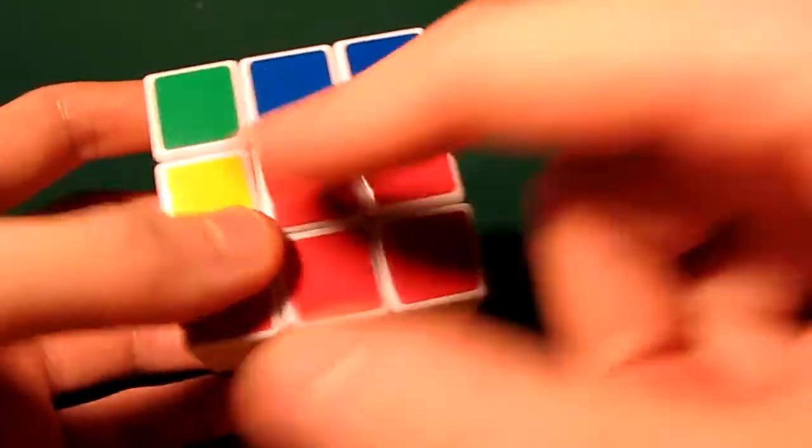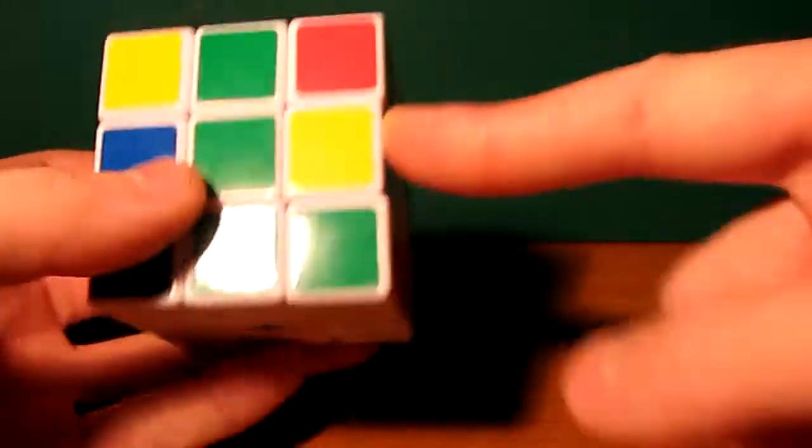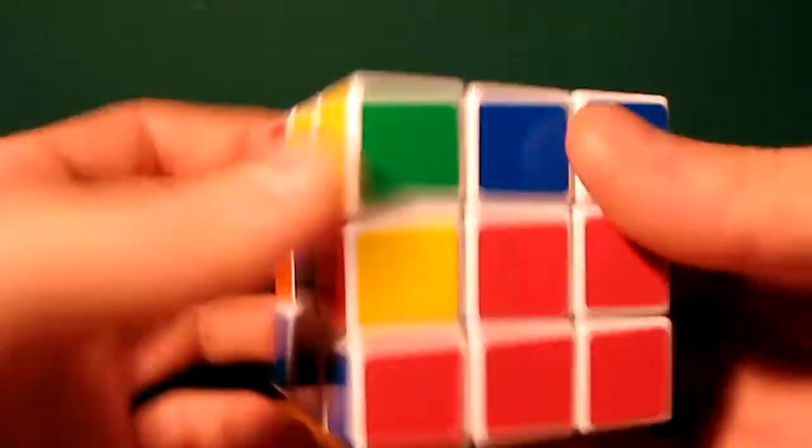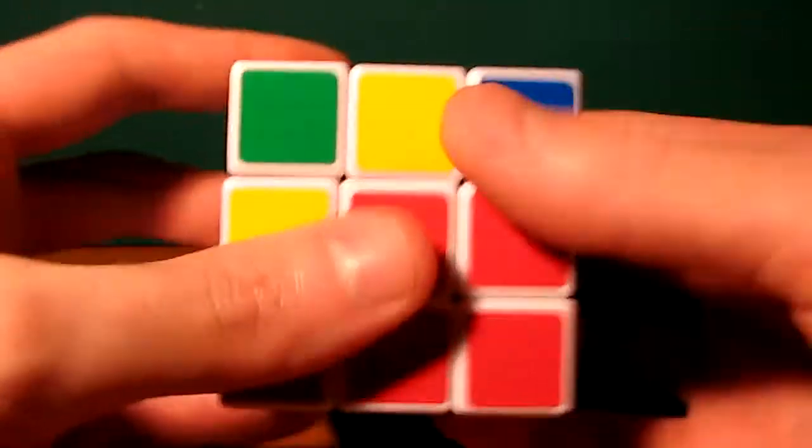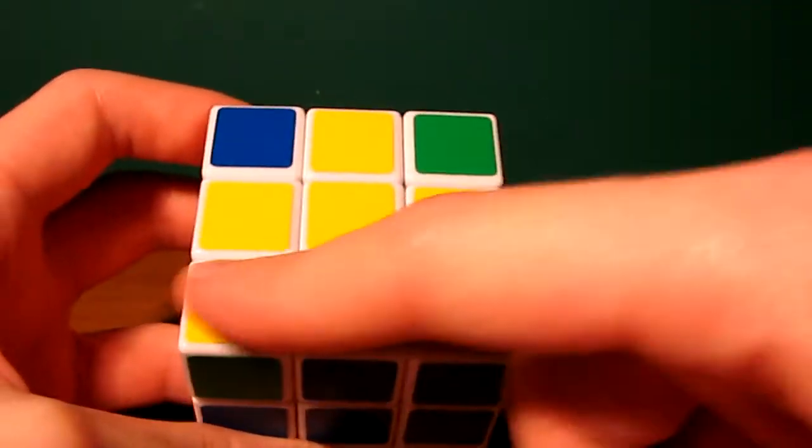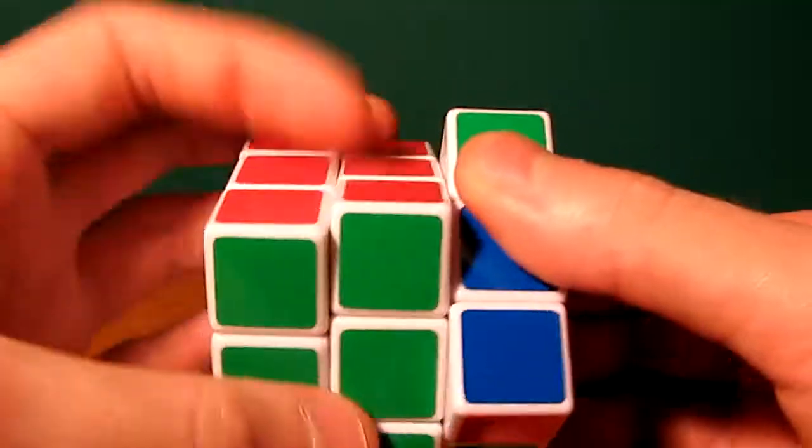Next thing after that is put the edges into place to form the first two layers. So I'll do that here. And once you have the edges in place, like I said, you're going to have the first two layers and all you're going to have to do after that is the last layer. So there we go. First two layers, all done.